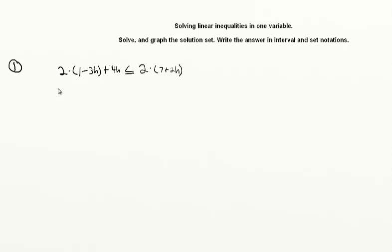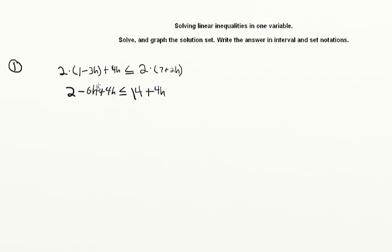So we have two times one, which gives us two, and then two times negative three gives minus six h, and we also have plus four h. That's less than or equal to. On the right side, two times seven is fourteen, and two times positive two is four, so plus four h.